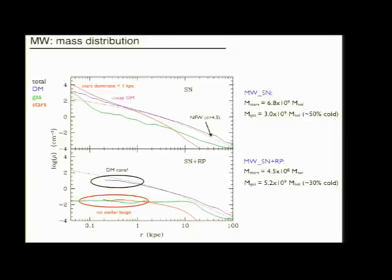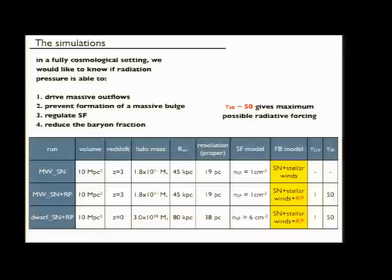If we look at the total mass budget, we see that there's more than a factor of 10 suppression in the total stellar mass. Which redshift? This is at redshift three. Yeah, this model is only run to redshift three whereas the dwarf is run to redshift zero.